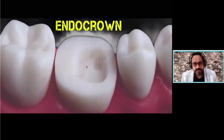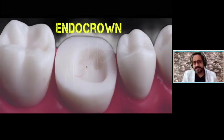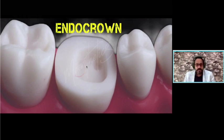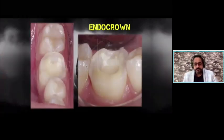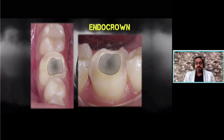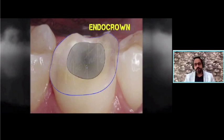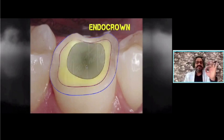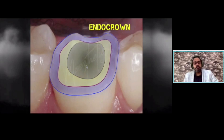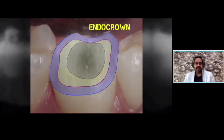Coming to the next aspect: endo-crats — post-endodontic restorations with a dome-like extension. After access opening and root canal, instead of building the entire core in composite as we normally do, in endo-crats you leave the core as it is. The dentin-enamel junction is identified: whatever is yellow is dentin, whatever is blue is enamel. If you have a 360-degree ring of enamel present peripherally, be very confident — this will survive the test of time.